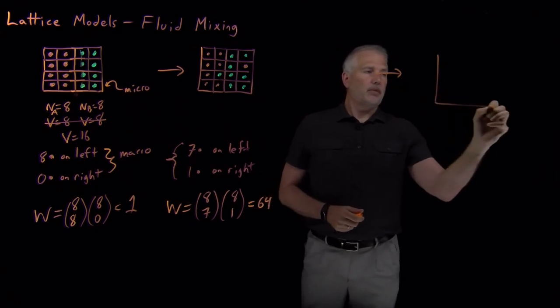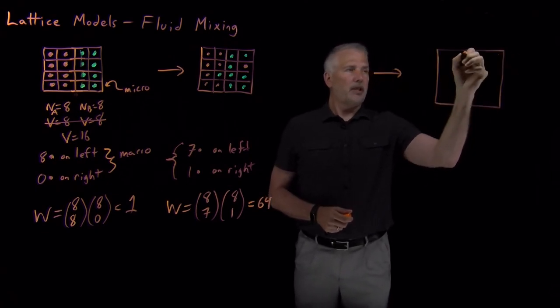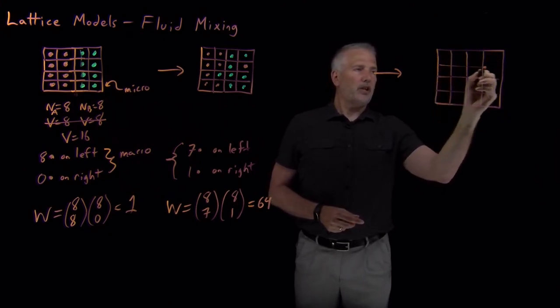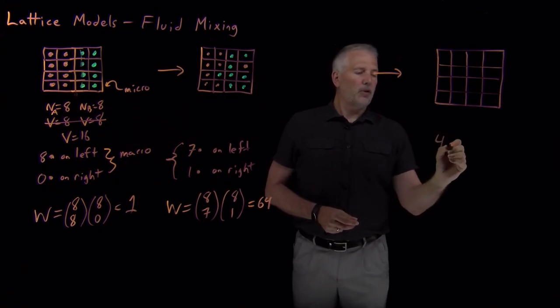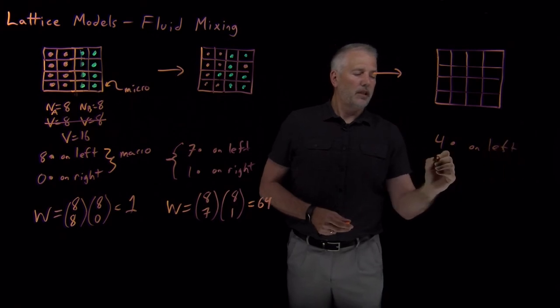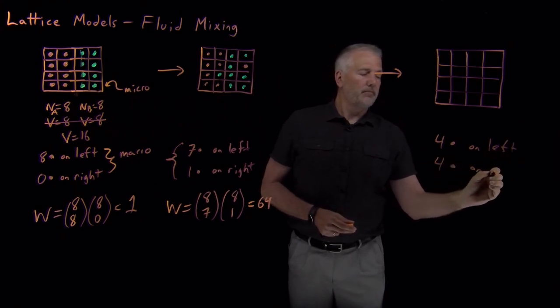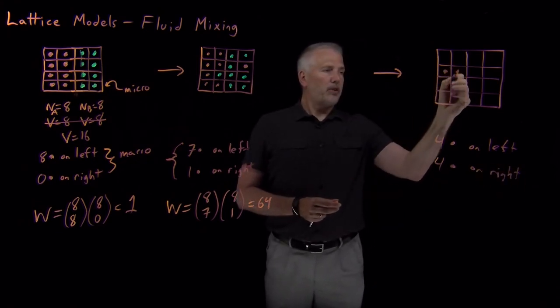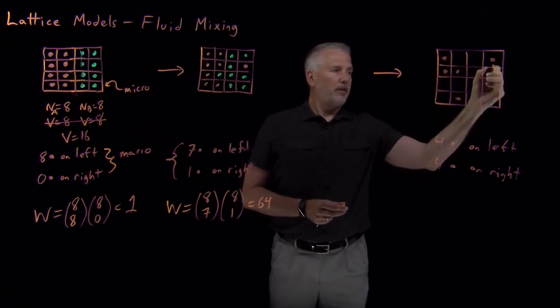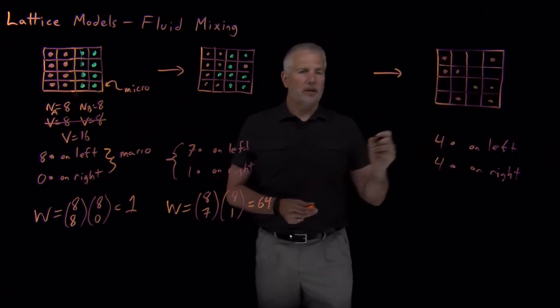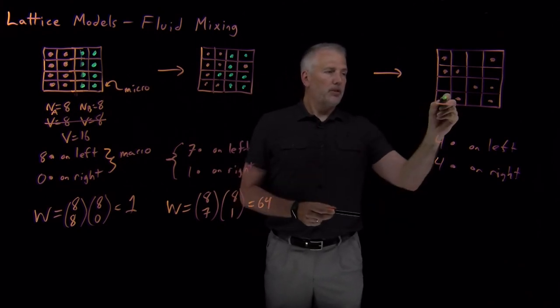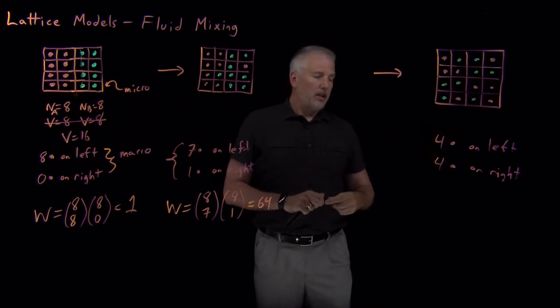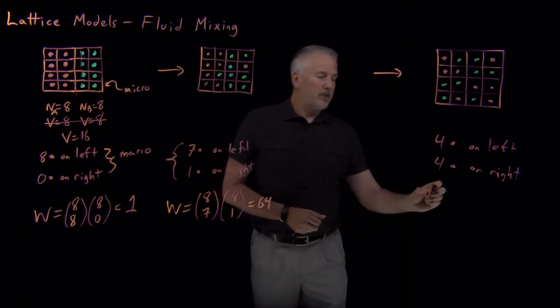I can ask questions about any degree of mixing I want, but it turns out, not surprisingly at this point perhaps, if I ask the question, how many microstates are there that can be described by four orange molecules on the left and four of them on the right. So if that's my microstate, I want to put four molecules down on the left somehow and then four of them on the right somehow, the rest of them green molecules, four on the left and four on the right for the green molecules.